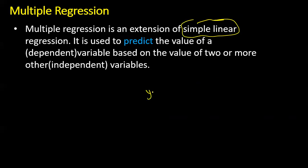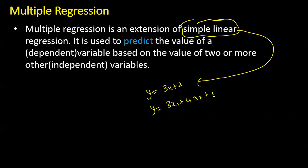For example, if I have y = tx + 2, this is simple linear regression. Now similarly I am extending this to 3x1 + 4x2 + 5x3 + 7. There are x1, x2, x3 — multiple independent variables which are useful in predicting the value of y. So this I will call multiple regression.